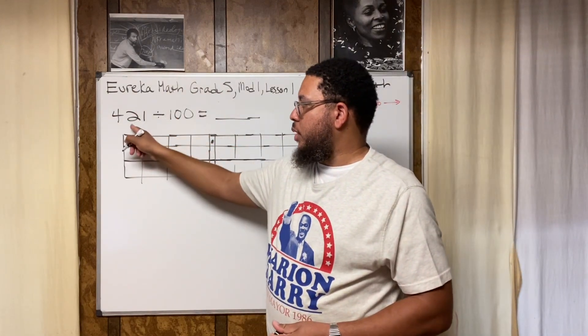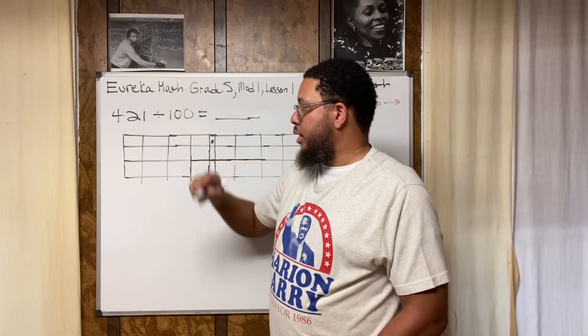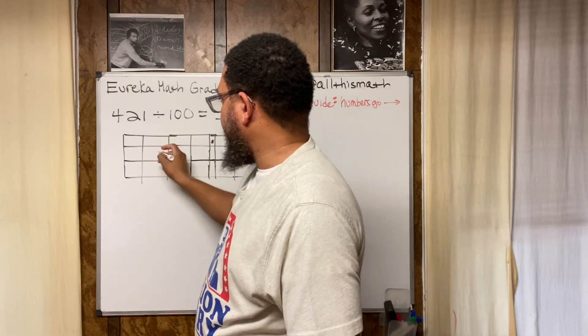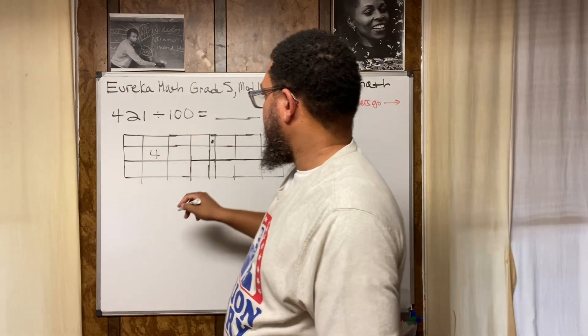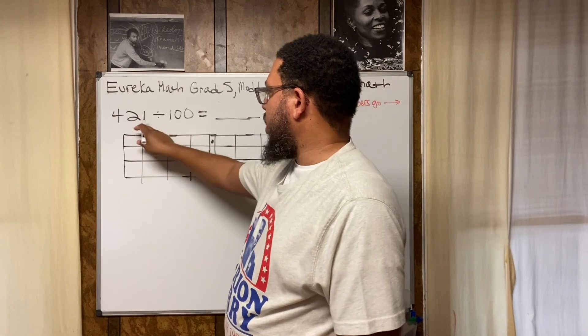This is 420 and one: four hundreds, two tens, one one. So the four goes in the hundreds place which is right here, the two goes in the tens place which is right here, the one goes in the ones place which is right here. We got 421.